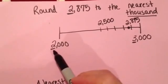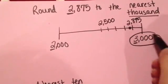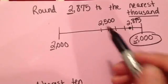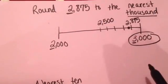So again, now I'm asking myself, is it closer to $2,000 or $3,000? Well, we can clearly see it's closer to $3,000. So $2,875 rounded to the nearest thousand would be $3,000.